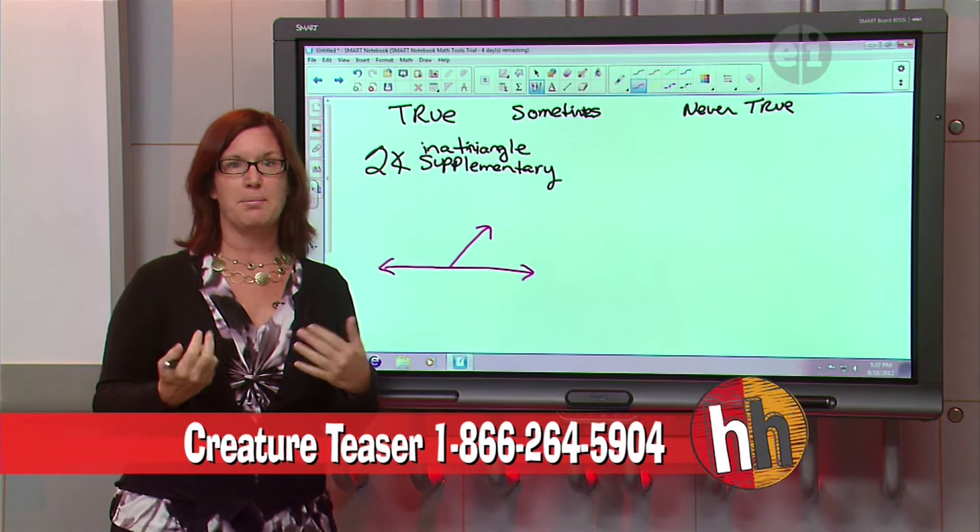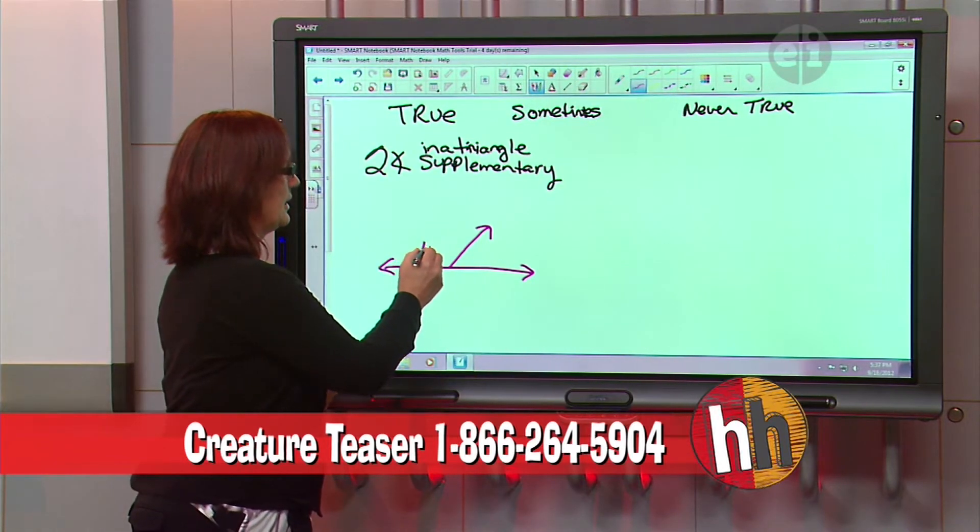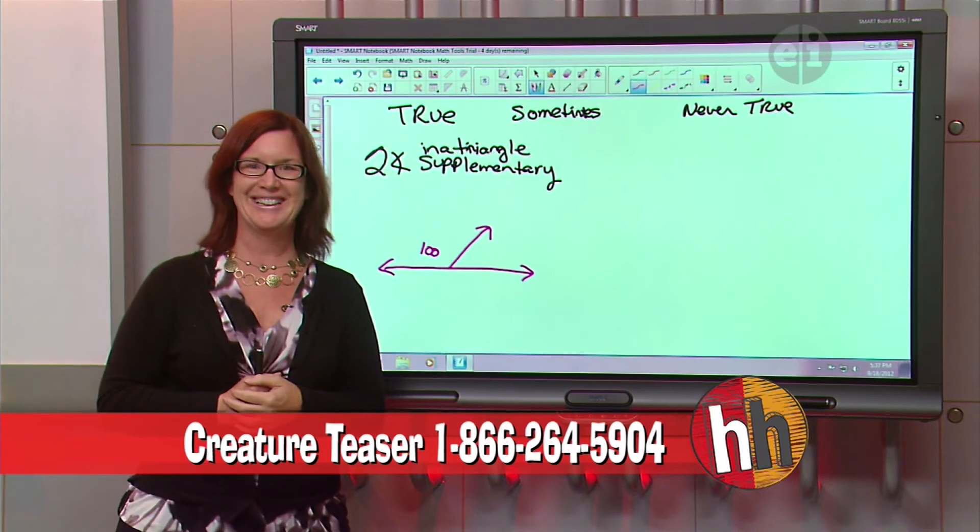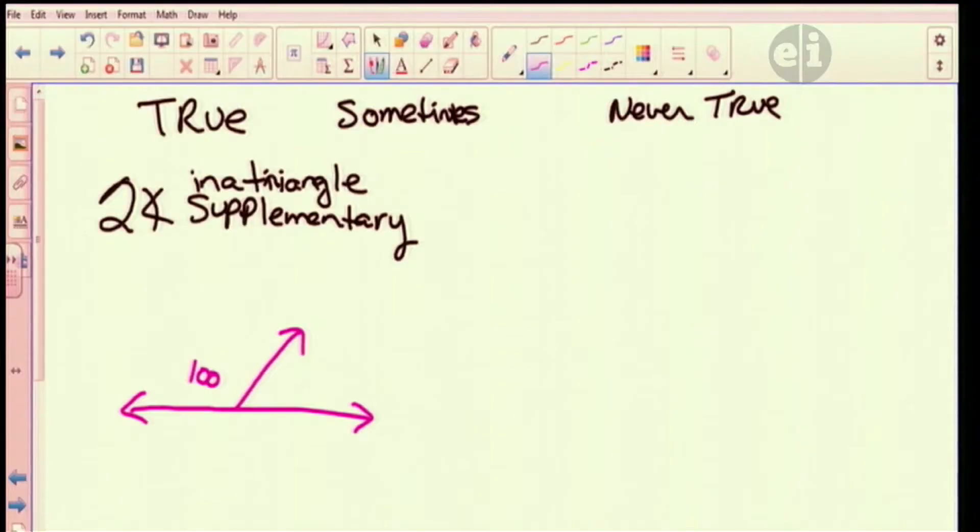Okay, let's think of a quick example of one. If this one was 100, and I know they're supplementary that they add up to 180, what would that missing piece over there be? 100 plus what number would get you 180? 80. That would be 80. Great.